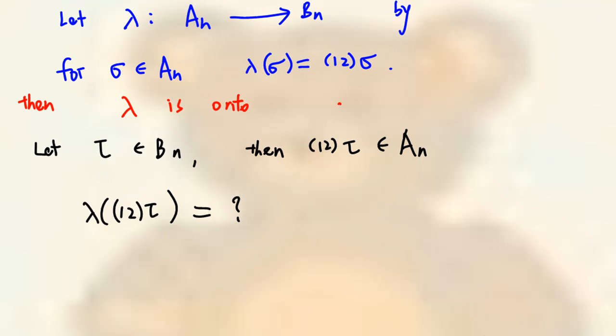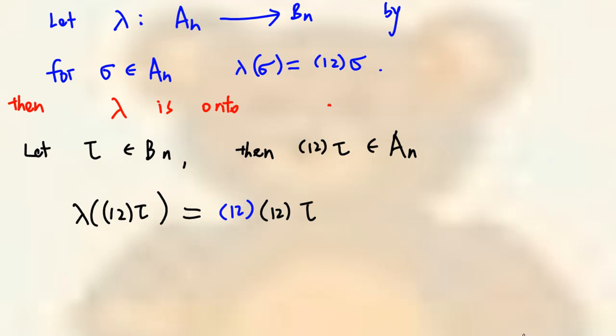Now, what is the image of (1 2) times tau under lambda? By the definition of lambda, this is equal to (1 2) times (1 2) times tau.